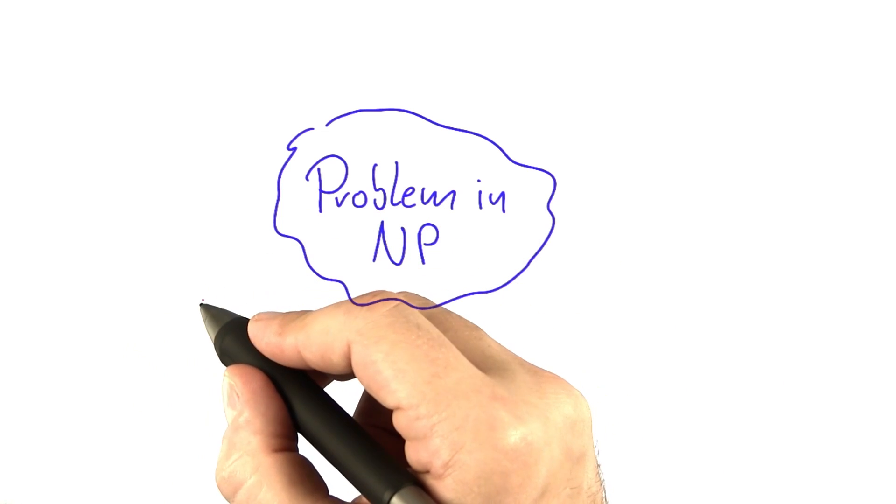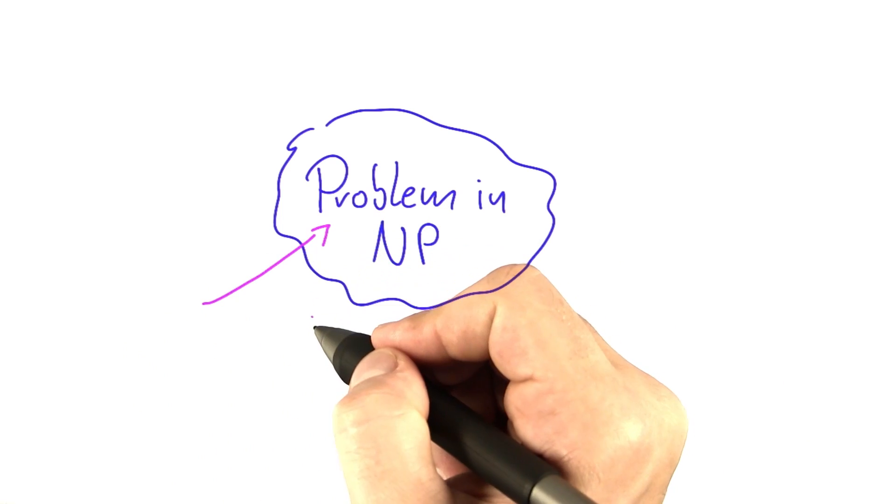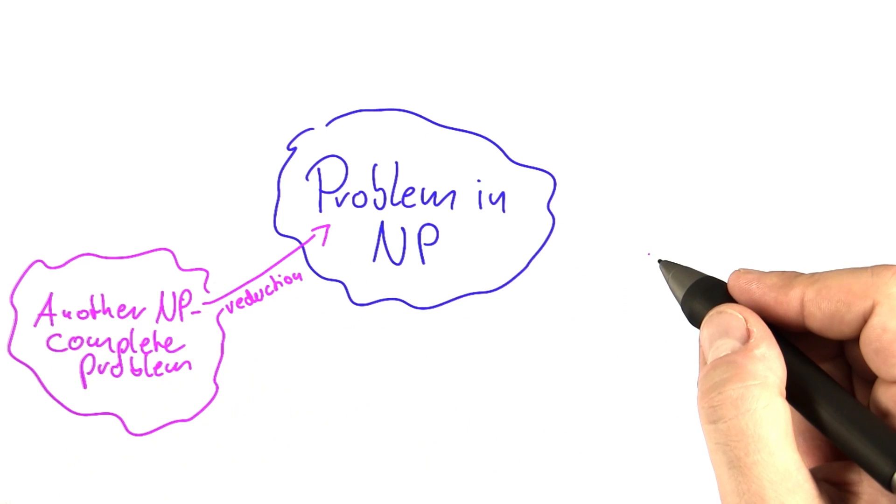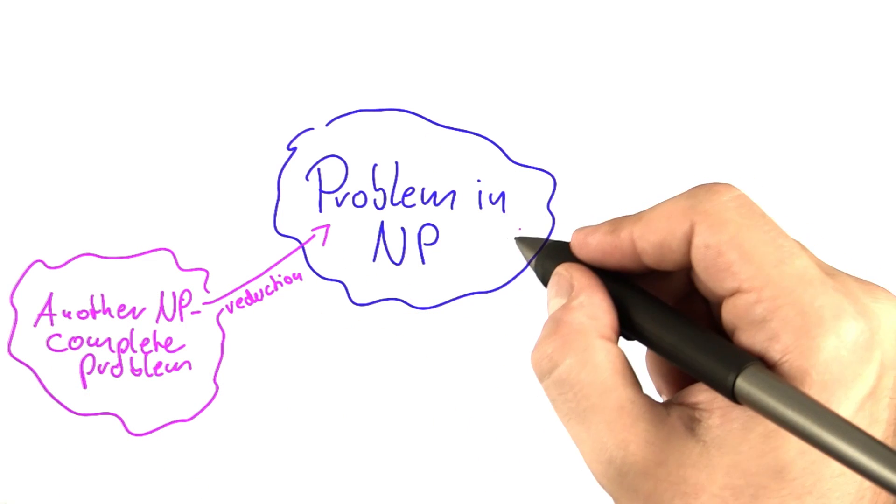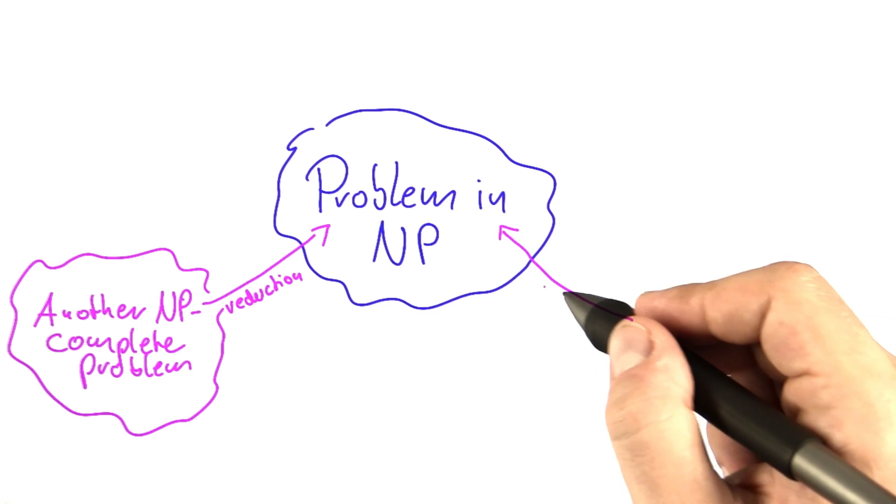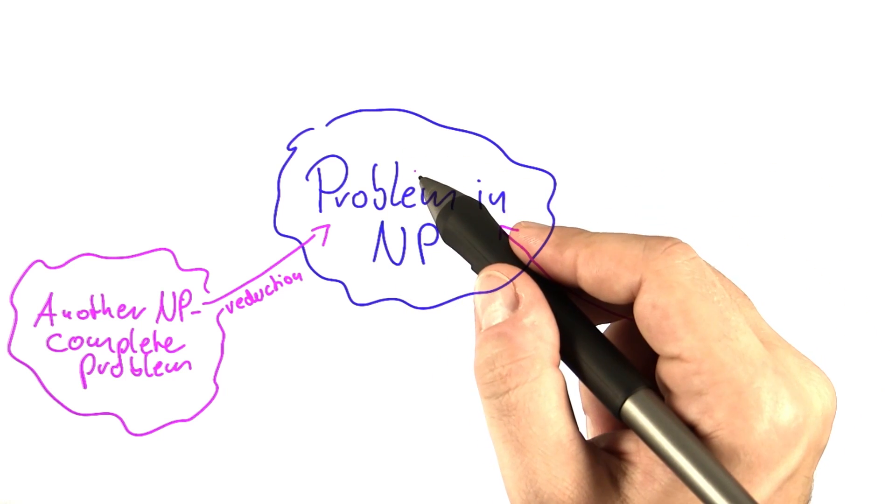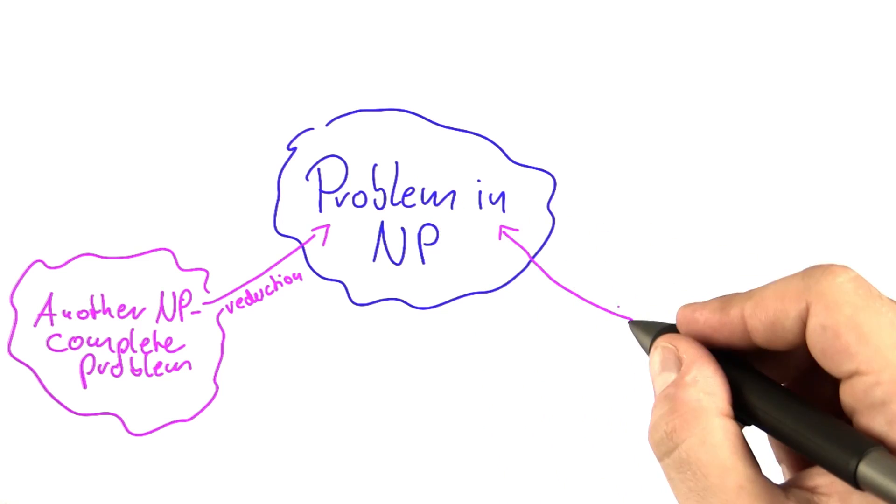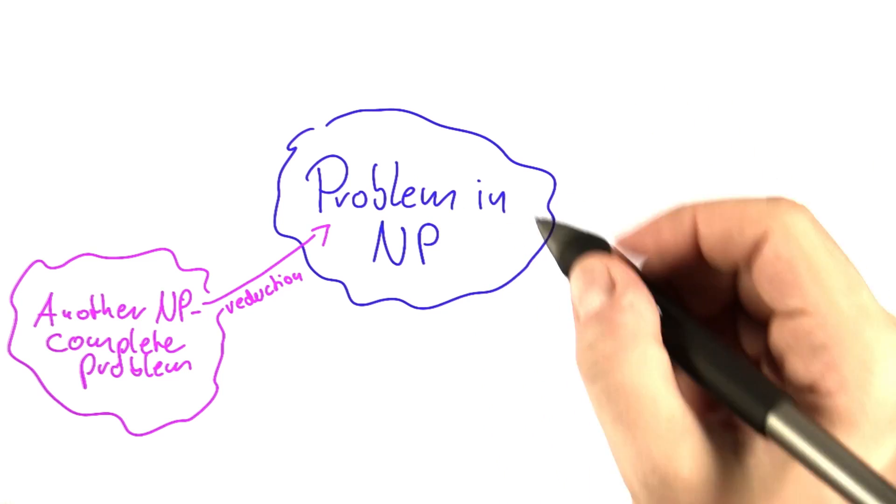The first one is you could take another NP complete problem and reduce it to your new problem. A second way would be to use the definition of NP completeness and show that this problem can be used to solve any other problem that is also solvable in NP. And by showing, I mean proving.